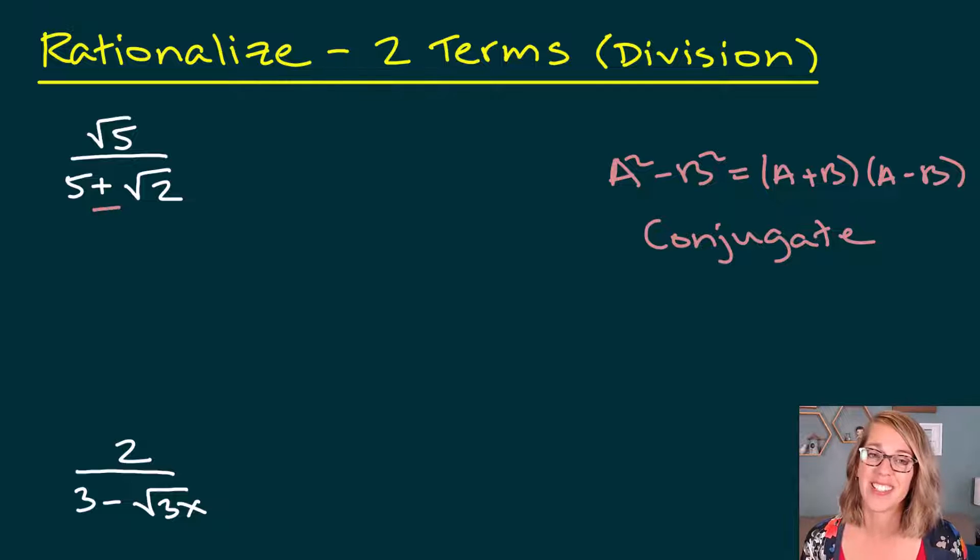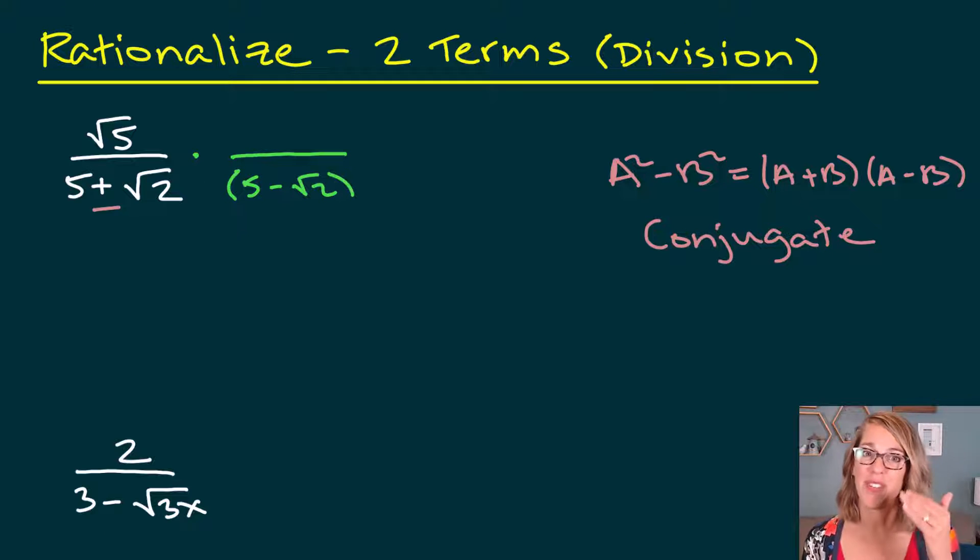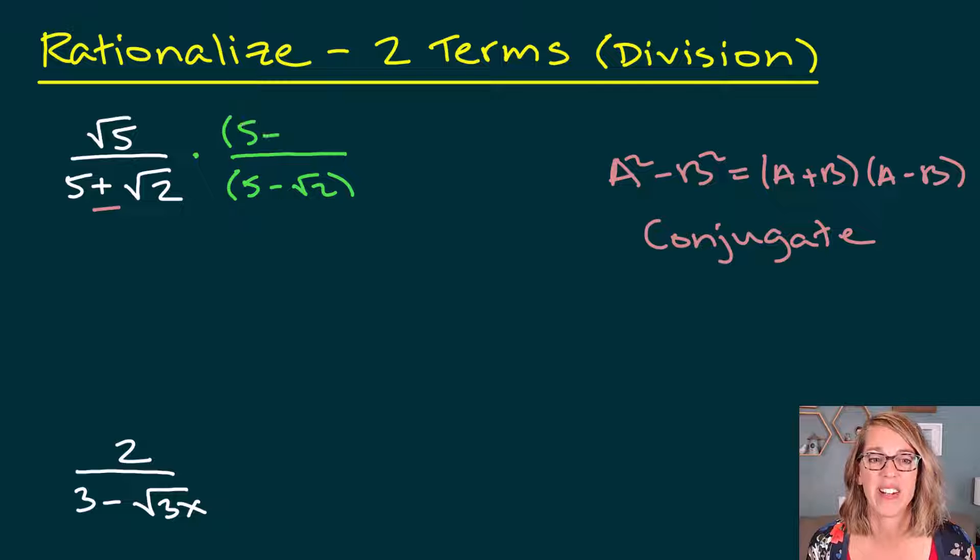So if I've got a plus sign in my denominator, the conjugate is going to be minus, and if I have a minus sign, the conjugate is going to be a plus. So I'm going to go ahead and multiply here, building that difference of squares, by 5 minus radical 2. Whatever I do in the denominator, I've also got to do that up in the numerator. So I go ahead and multiply by the very same thing.